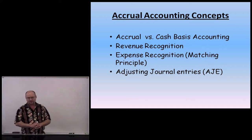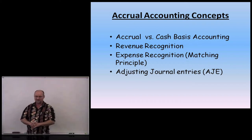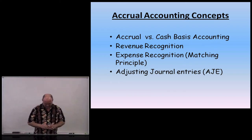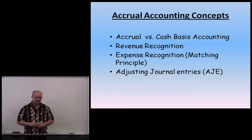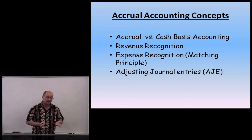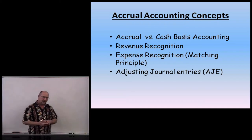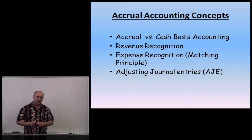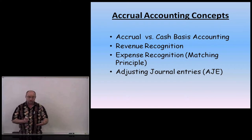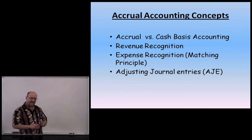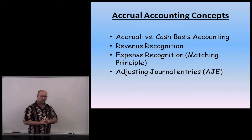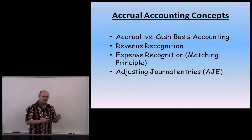Today's topic is accrual accounting concepts. This is possibly the toughest chapter in financial accounting. What we're doing is applying the two basic rules of accrual accounting. Accrual accounting is required by generally accepted accounting principles. All publicly traded companies — all the big companies we know — have to use accrual accounting. Many private companies also have to use accrual accounting; if they apply for a loan at a bank, the bank will want financial statements prepared using accrual accounting. Small companies can still use the cash basis, which I'll discuss briefly only to compare it to accrual accounting.